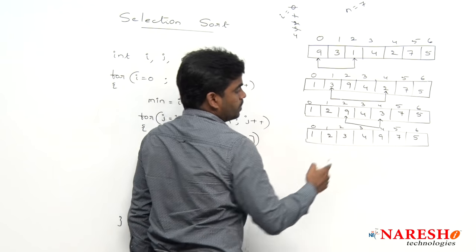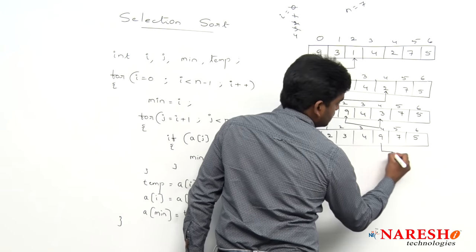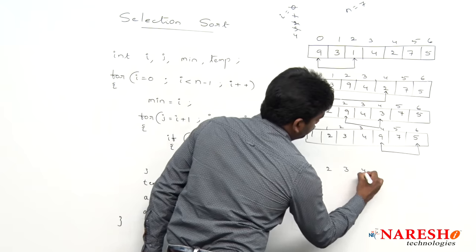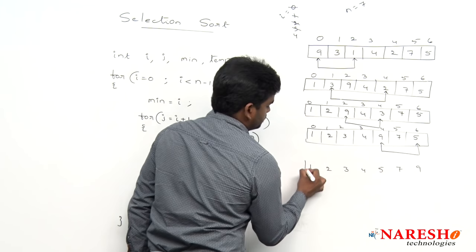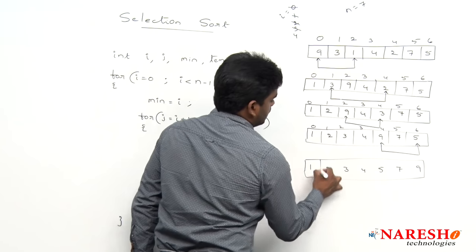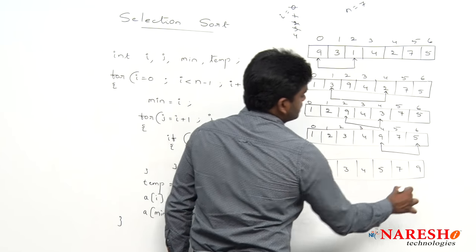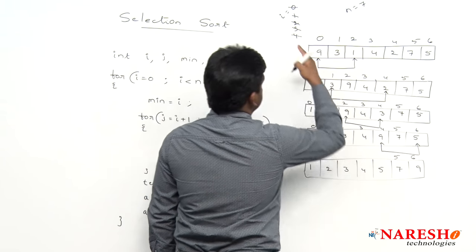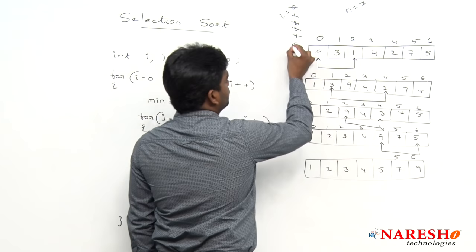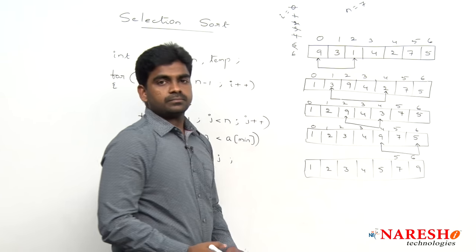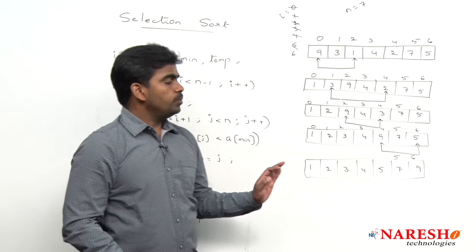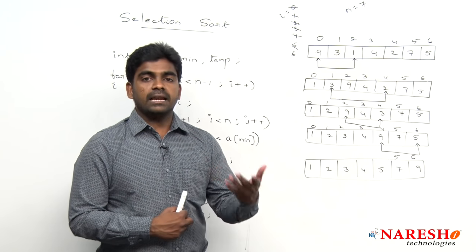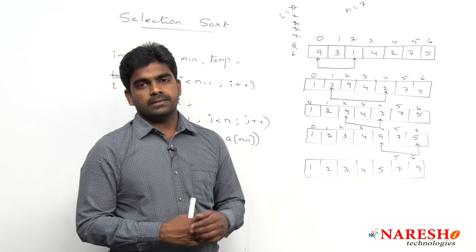When i value becomes 4, the fourth element is compared with the next least element, which is 5. So the array becomes 1, 2, 3, 4, 5, 7, 9. The remaining 2 iterations: 5 compares with itself and the last element also falls into place automatically. This is how selection sort performs the sorting operation.